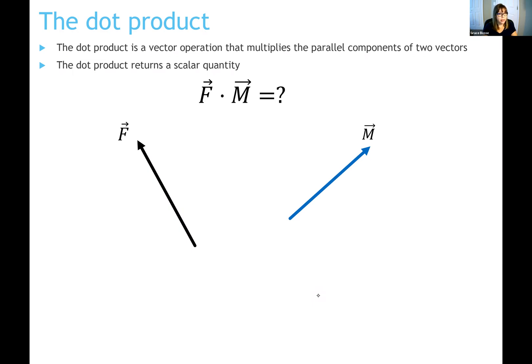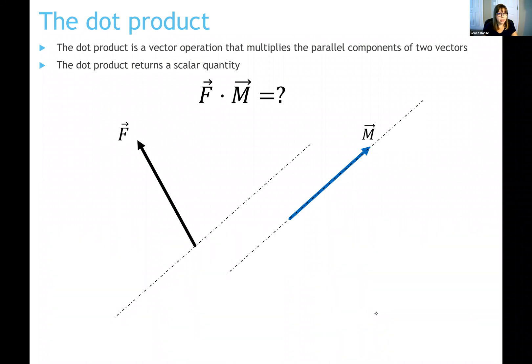Let's say I have two vectors F and M and I want to find the dot product between them. The dot product multiplies the parallel components of the two vectors. Take vector M and define its direction with a dotted line — that's the direction parallel to vector M. Now bring that parallel line over to vector F, and find the component of vector F in that parallel direction.